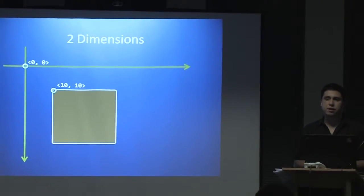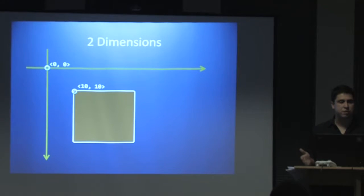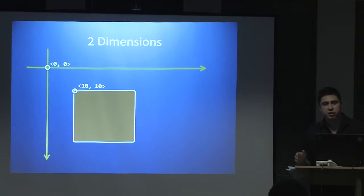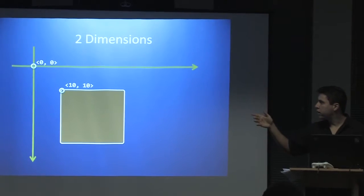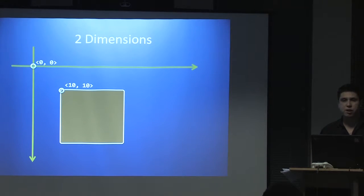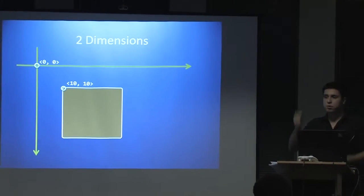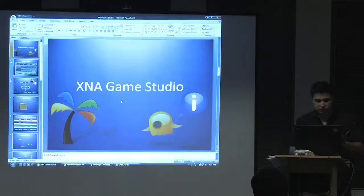We're going to start off our little journey here with simple 2D game development. What you'll find is that XNA has made it very easy for existing Windows developers. If you're familiar with GDI Plus, they've got a 2D coordinate system with X and Y. The origin is in the top left of the screen — just like regular Windows GDI programming. To draw something, you just need an image or texture and a 2D position. So let's see how to do that.